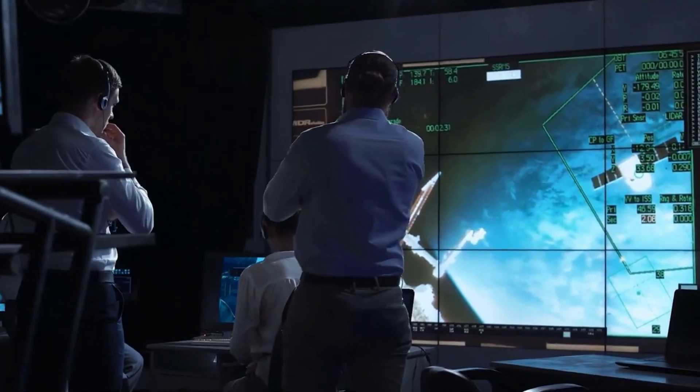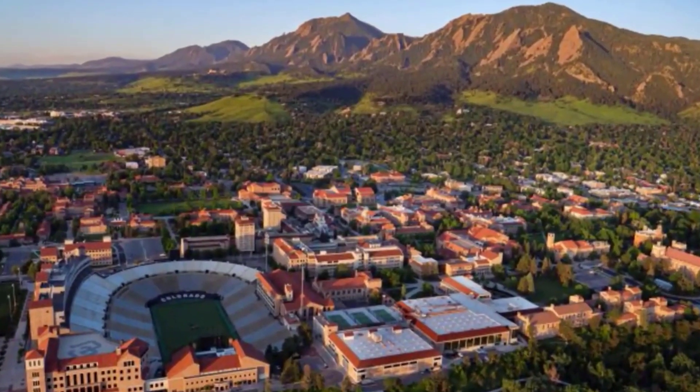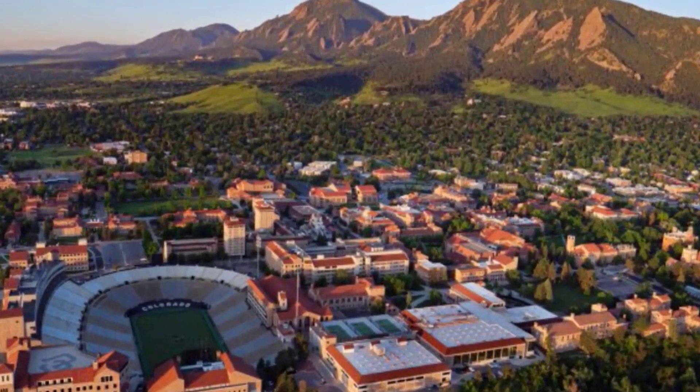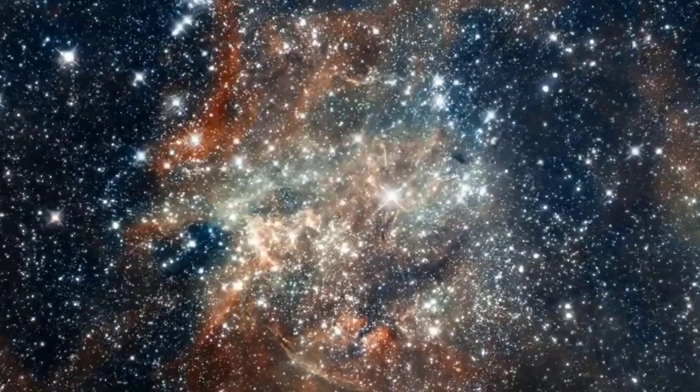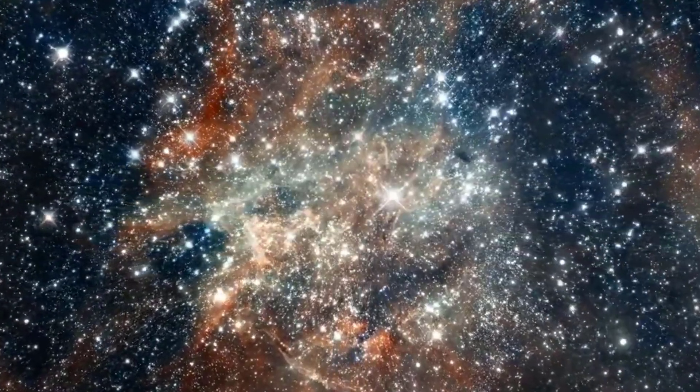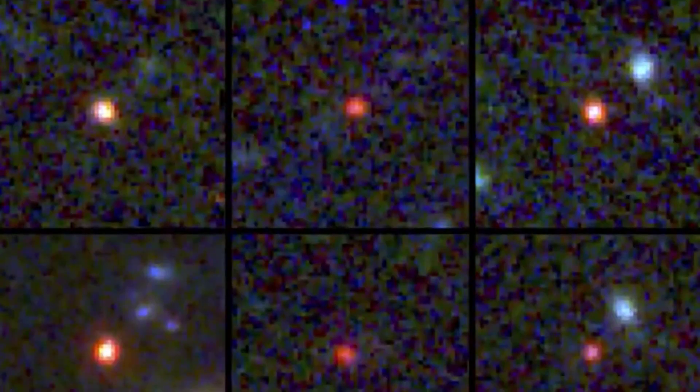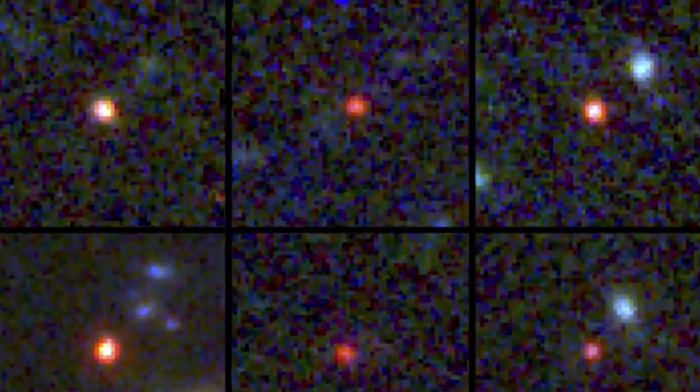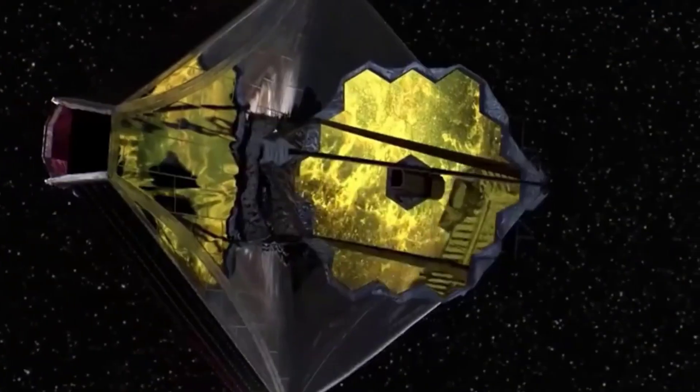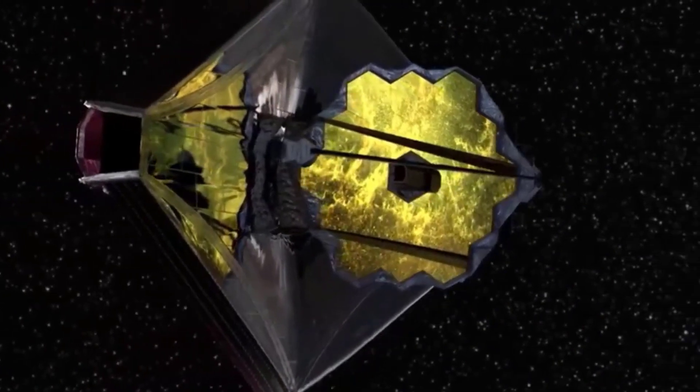At least six galaxies date back as long as 500 million years after the Big Bang. The mass of the greatest of the six is estimated to be 10 times larger than the Milky Way, or one trillion times greater than our sun. Co-author Erika Nelson remarked, it's crazy, you simply don't anticipate that the early cosmos was able to organize itself that quickly. It shouldn't have been possible for these galaxies to form.